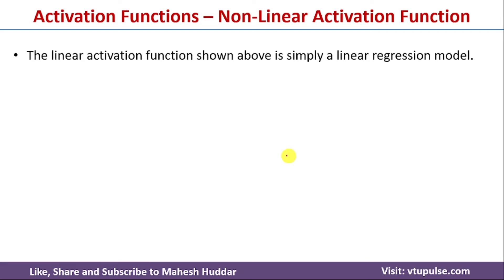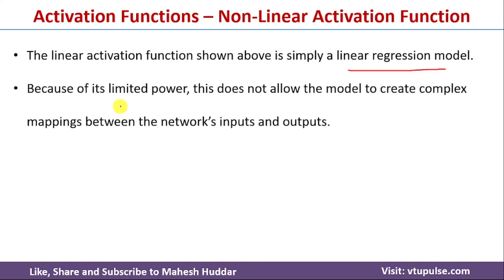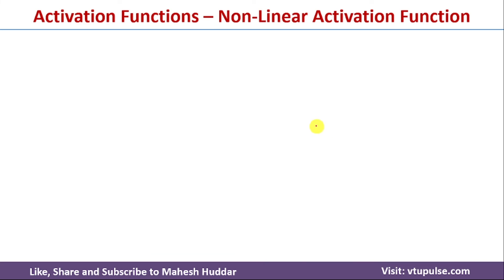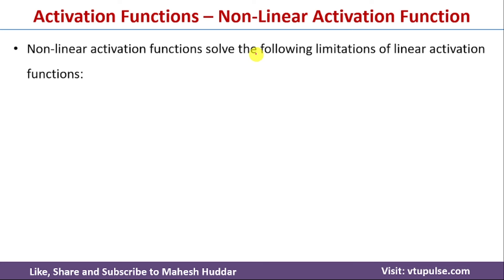There are many disadvantages of the linear activation function: it is essentially a linear regression model, it does not support multiple layers in a neural network, it cannot be used with backpropagation, its power is very limited, and we cannot create complex mappings between inputs and outputs. To overcome all these disadvantages, there comes something called the non-linear activation function.